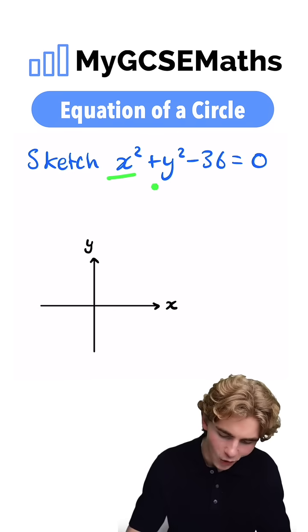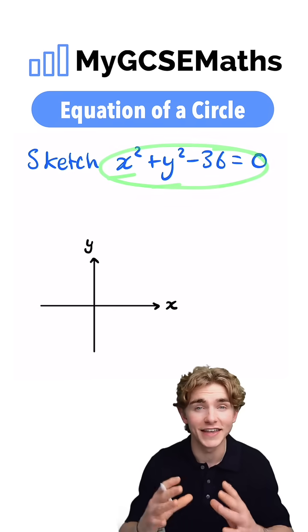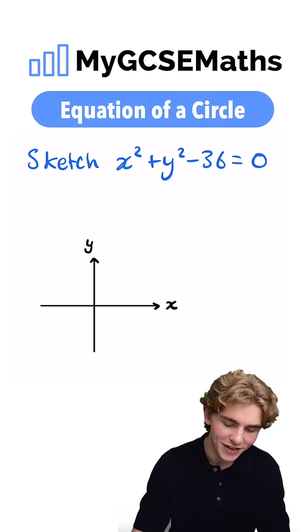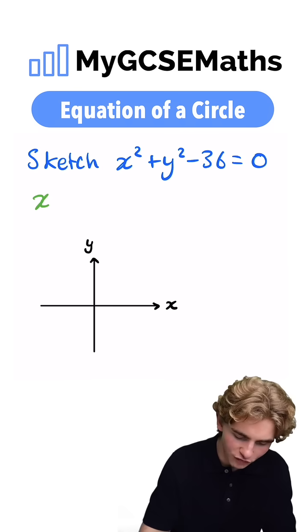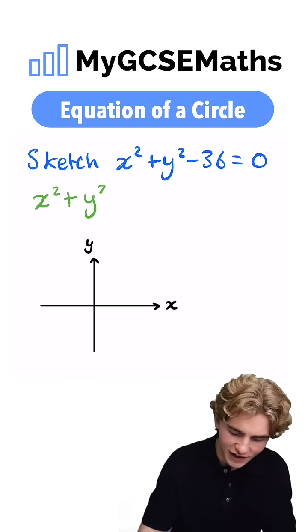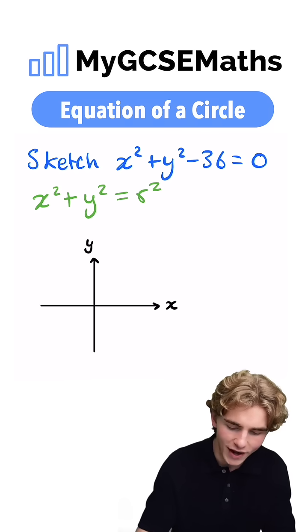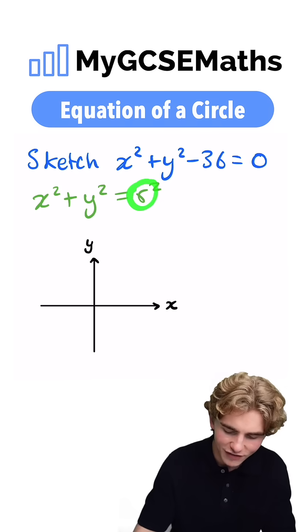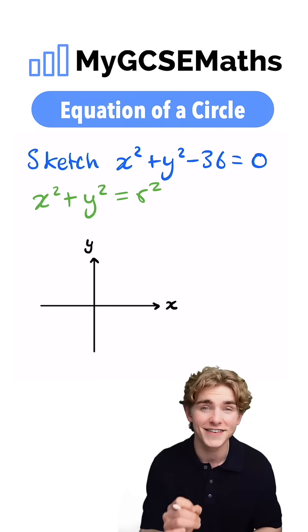Whenever we have an x squared and a y squared in the same equation, it's going to be a giveaway sign that we're dealing with the equation of a circle. The general format for the equation of a circle is x squared plus y squared equals r squared, where r is the radius of that circle and the circle is centered at the origin.